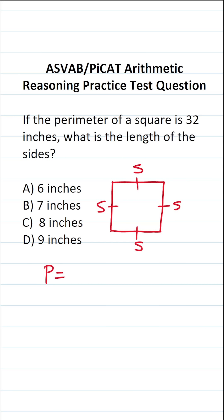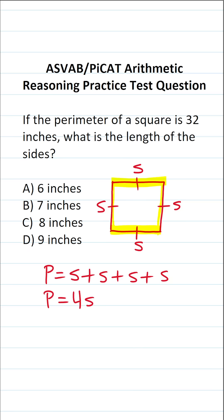How do you find the perimeter of any regular polygon? You simply add up all of its sides. So to find the perimeter of a square, we're going to add this side, this side, this side, and this side together. That looks like this: S plus S plus S plus S, so our perimeter is equal to 4S.